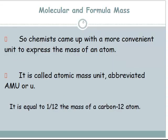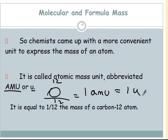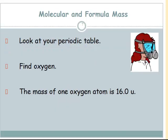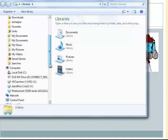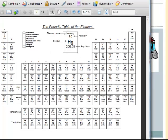Chemists have come up with another way to express the mass of an atom other than grams, to make it more meaningful. It's called an atomic mass unit, abbreviated as amu or just u. It is equal to 1/12 the mass of a carbon-12 atom. So carbon-12 weighs 12, and if you divide by 12 you get one atomic mass unit. We can look up atomic mass on the periodic table — let me pull one up here.